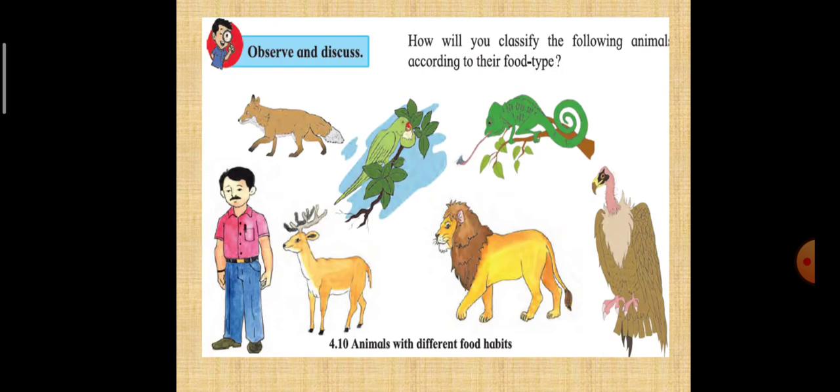Observe and discuss. How will you classify the following animals according to their food type? As you can see here, a deer is shown. It is grass eating. What about the lion? It is dependent on deer. Vulture, it survives on dead and decaying organic matter. You can see a chameleon, it survives on insects.